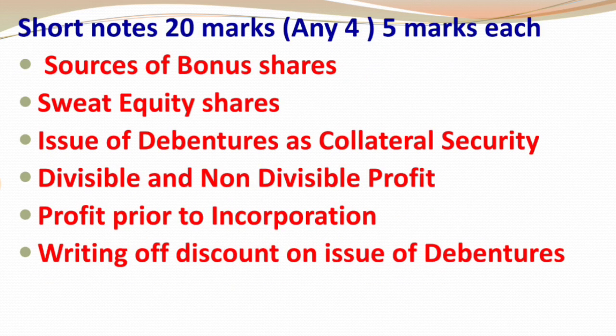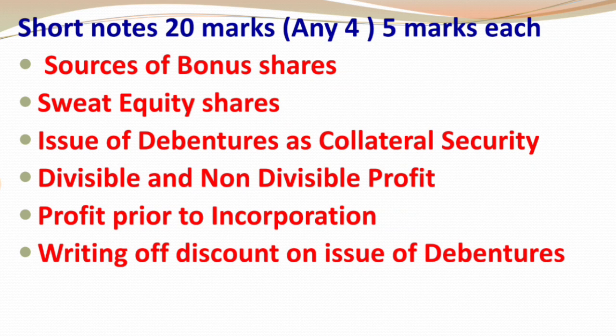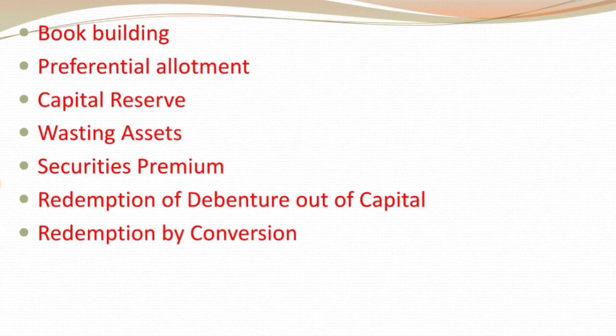For short notes, which carry 20 marks (any four, five marks each), the important topics are: sources of bonus shares, sweat equity shares — a very important concept — issue of debentures as collateral security, divisible and non-divisible profits from redemption of preference shares, profit prior to incorporation, and writing off discount on issue of debentures from redemption of debentures. Also prepare: book building.